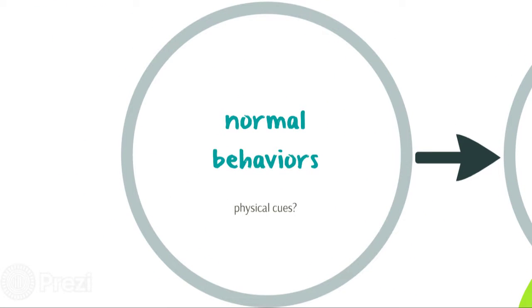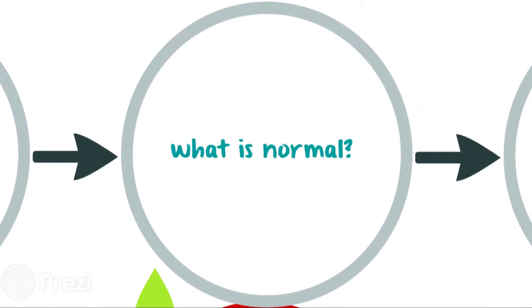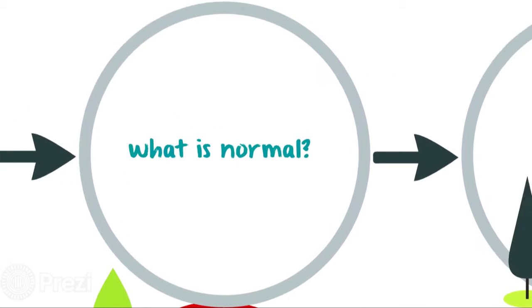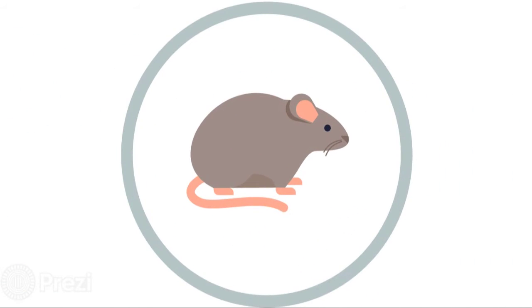What are normal behaviors and physical cues in domestic animals? How do we determine normal? How do we use observation and physical examination to gather data that describes animal health? How are animals used and managed in society?